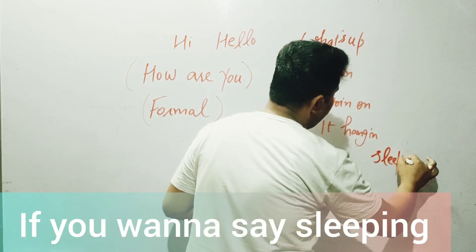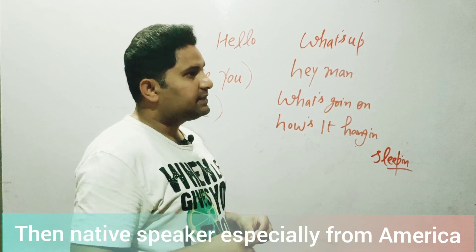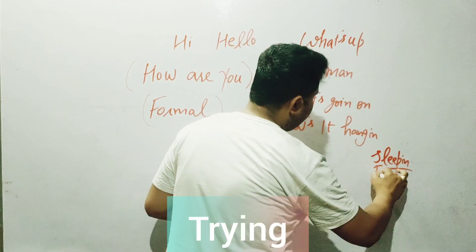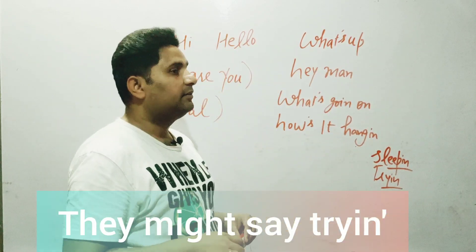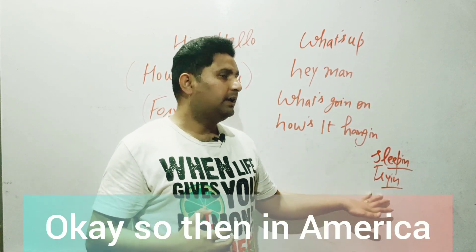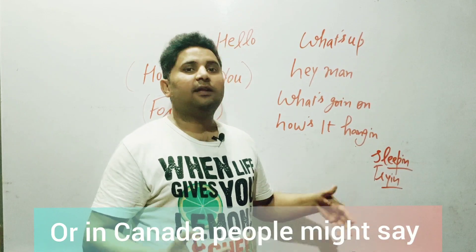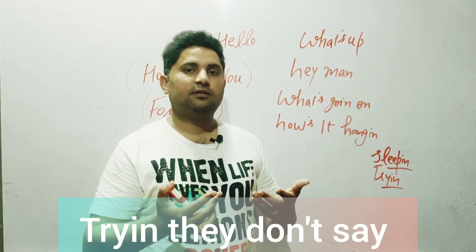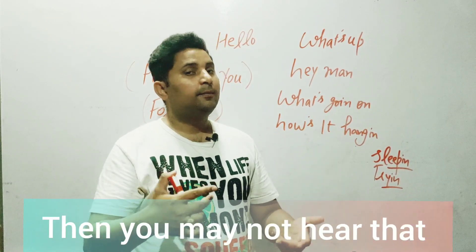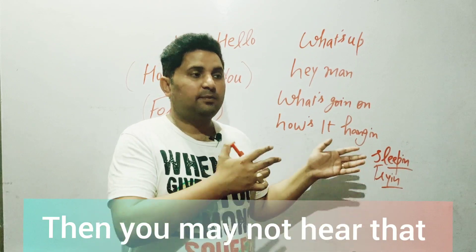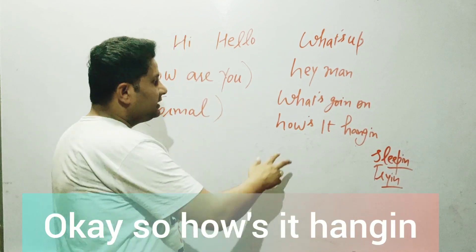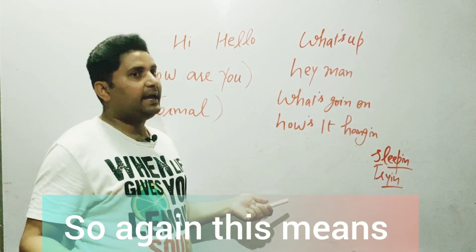For example, if you want to say 'sleeping,' native speakers from America say 'sleepin.' If you want to say 'trying,' they might say 'tryin' — like 'I'm tryin' to teach you.' In Canada or North America, you won't really hear the hard G. So 'how's it hangin' again means 'how are you.'